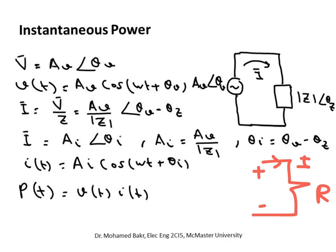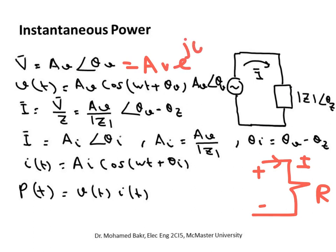Now we talk about the case where everything is sinusoidal. Here we have a sinusoidal source with amplitude A_V and angle θ_V, which supplies current to a load with impedance Z. We write Z as |Z| at angle θ_Z — remember, impedance is a complex number with a modulus and angle. Because the voltage is sinusoidal, a sinusoidal current will flow. If the voltage phasor is A_V∠θ_V, this can also be written as A_V·e^(jθ_V).